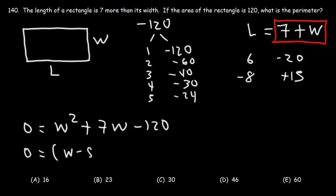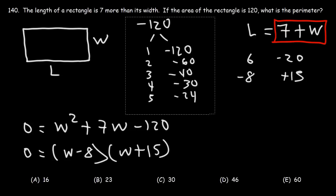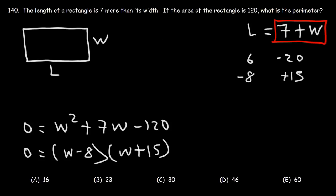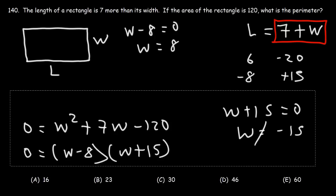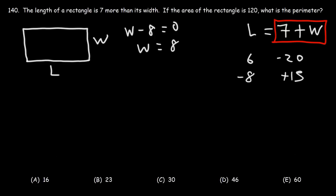To factor this expression it's going to be (W minus 8)(W plus 15). Setting W minus 8 equal to zero gives one possible answer: W equals 8. If we set W plus 15 equal to zero, W cannot be negative 15 — you can't have a negative side length — so we omit that answer.